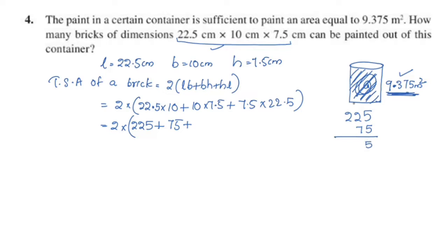Calculating: 22.5 × 10 = 225. 10 × 7.5 = 75. 7.5 × 22.5 = 168.75. So we have 2 into (225 + 75 + 168.75).